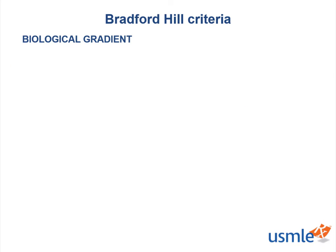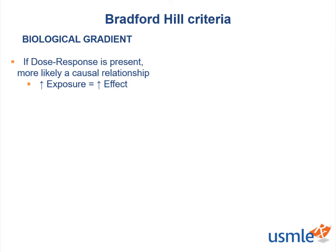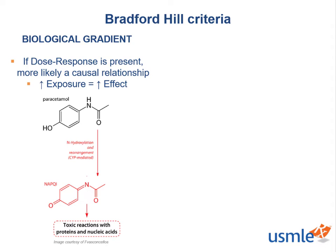Our next criterion is biological gradient: if a dose-response is seen, it's more likely that the cause-effect relationship is causal — more exposure, more effect. Hill himself recognized that a linear dose-response rarely exists due to individual susceptibilities and environment. Applied to liver toxicity: taking 325 mg to 4,000 mg of acetaminophen (paracetamol outside the US) is generally safe. However, if you ingest a toxic amount, usually over 4 grams a day, a toxic metabolite called NAPQI can accumulate through CYP-mediated hydroxylation, leading to liver toxicity — a well-known dose-response chemical reaction.